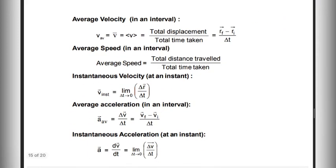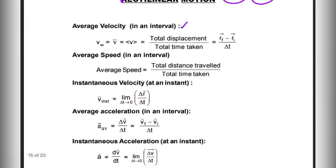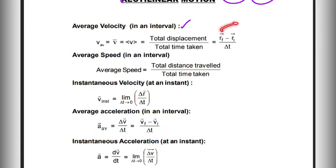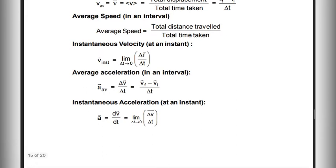If we talk about the formula in rectilinear motion, the first formula is average velocity. V average is equal to total displacement divided by total time. Total displacement is the final position vector minus the initial position vector, divided by total time, giving us V average.